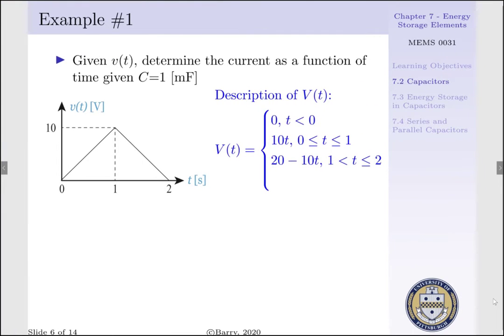In the time interval from 1 to 2 seconds, our voltage is decreasing from 10 volts to 0 volts. If we construct an equation of a line describing this behavior in the interval from 1 to 2 seconds, our equation is y equals mx plus b.